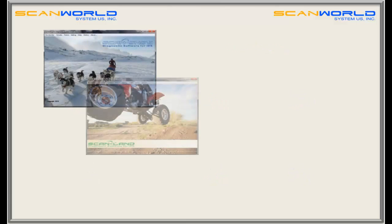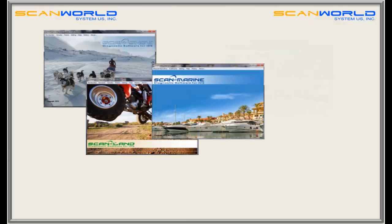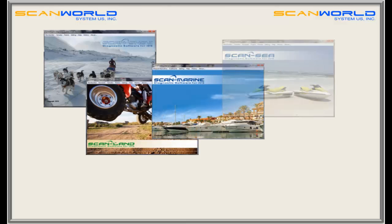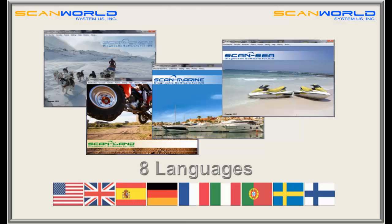Each software application has the same easy-to-use structure, so knowing one software means knowing all four. The user can choose between eight different languages: English, Spanish, German, French, Italian, Portuguese, Swedish, and Suomi.